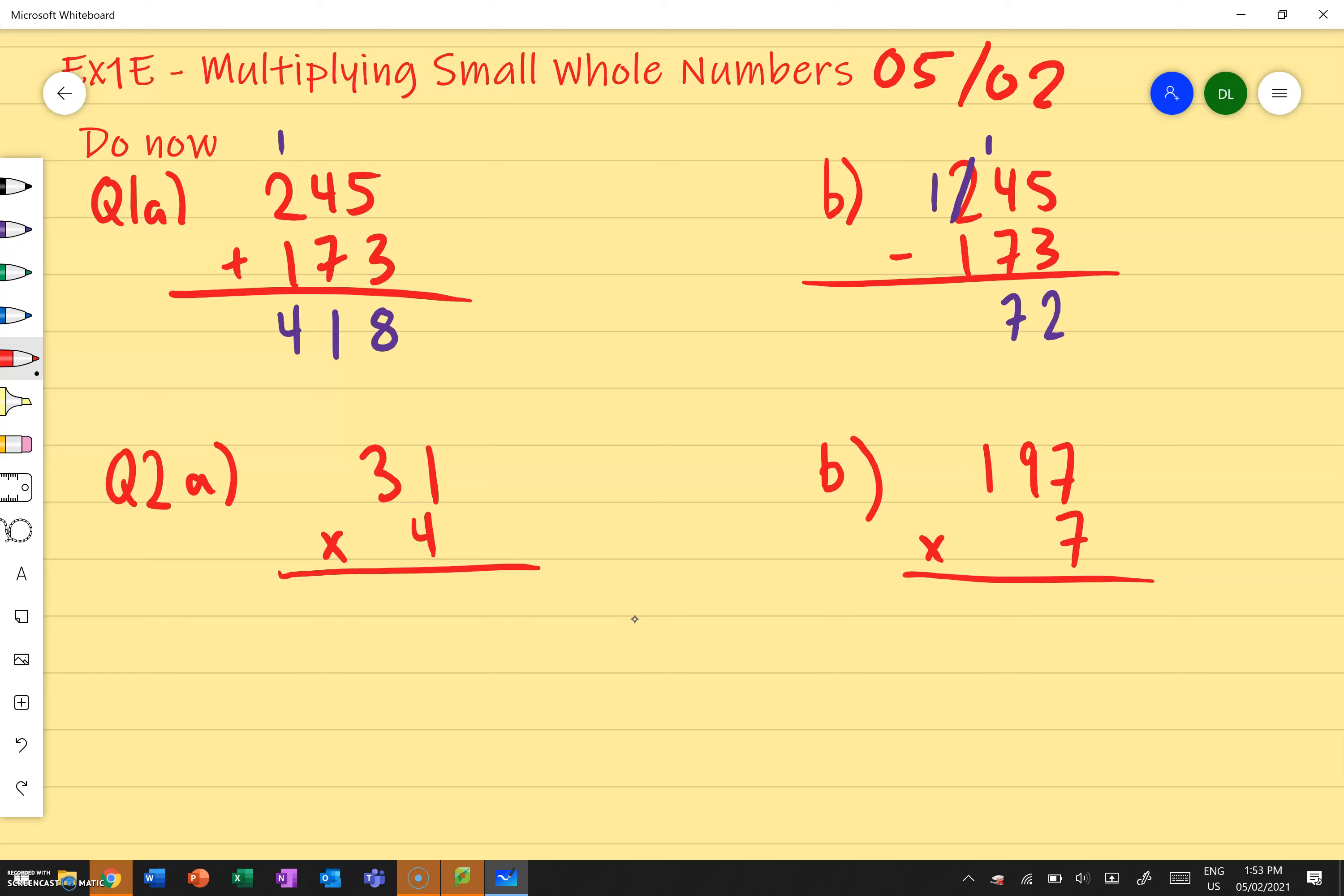So I got 31 times by 4. Can anyone tell me what do I need to do first? You start by doing the one first. Perfect, I'm looking at the ones, I multiply the ones. So what's one times four or four times one? Four. Am I done? No. What do I do now? Three times four.